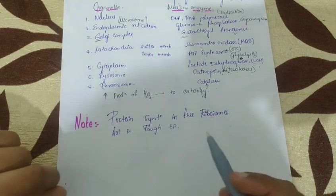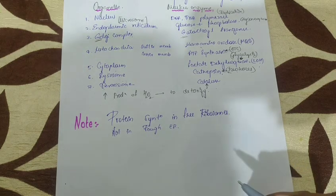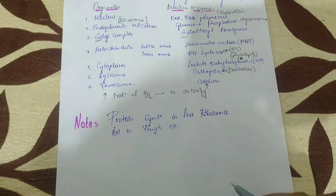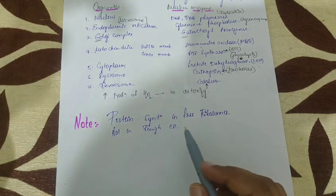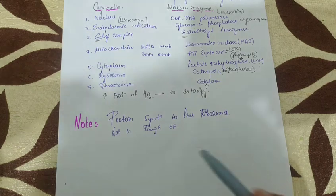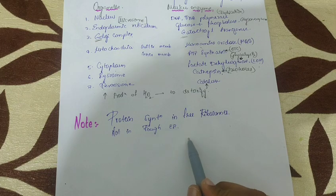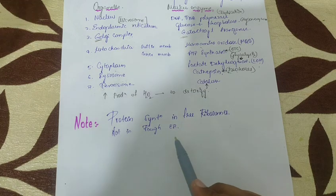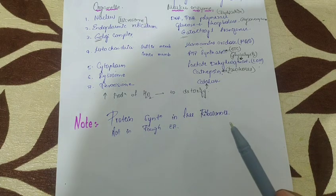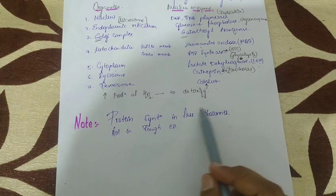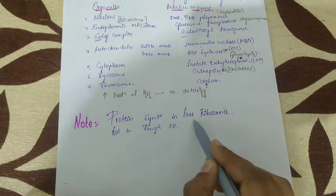Protein synthesis takes place in ribosomes, and we should not be misled here. For initiation of protein synthesis, free ribosomes are required — we cannot answer it as rough endoplasmic reticulum. There are two types of endoplasmic reticulum: rough ER, where ribosomes are attached, and smooth ER, which does not have ribosomes. Rough ER helps in protein synthesis, but ribosomes are the true protein factories of the cell. For initiation of protein synthesis, the answer is free ribosomes.